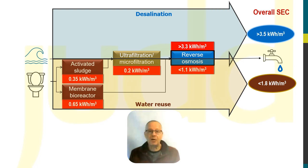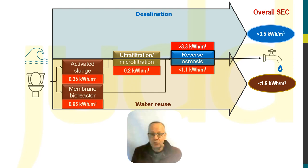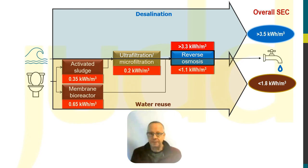Desalination by RO is always more energetically efficient than by evaporation, unless there's a source of waste heat, and freshwater production from sewage is more energetically efficient than from seawater. But of course, there are other factors to consider besides just energy, when it comes to drinking water supply.